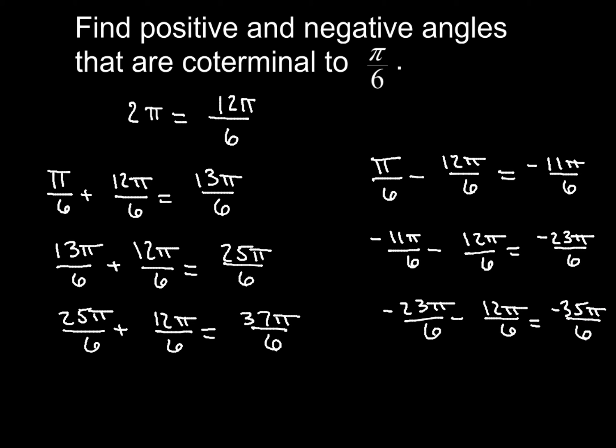Now there is a slight pattern here, and I won't get into it too much, but check out the difference between 13π over 6 and 11π over 6. If you ignore the negative sign, what number is in between 13 and 11? 12. What number is between 25 and 23? 24. What number is between 37 and 35? Yep, you know it. That's 36. So more on that in a minute.